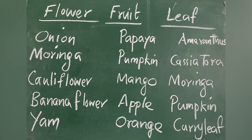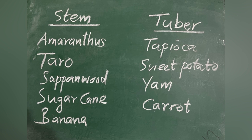Leaves: amaranthus, cassia tora, muringa, pumpkin leaves, curry leaves, chira, muringa. Stems: amaranthus stem, taro, saponwood, banana, sugarcane — you can add more. Tubers: tapioca, sweet potato, yam, chana, carrot, beetroot. All of you complete this table by asking your elders. You can add more.